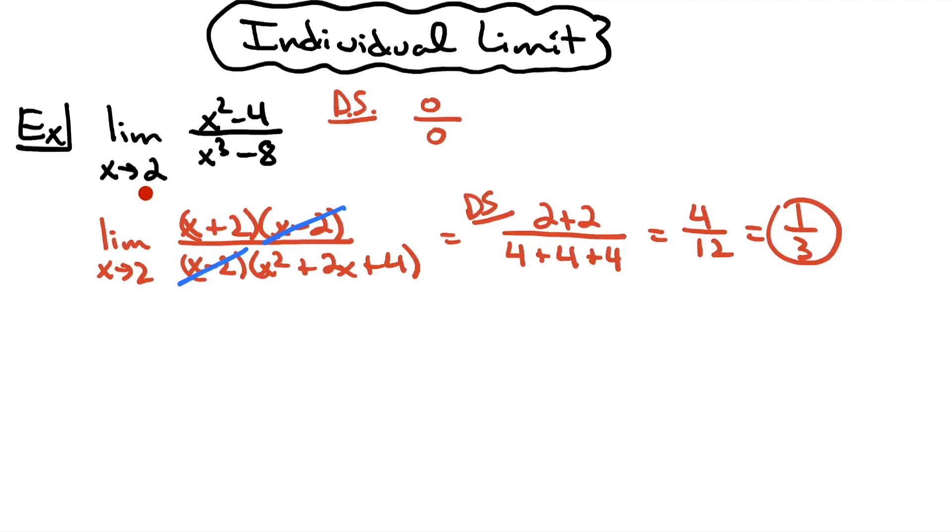Can you algebraically manipulate this by factoring some way, allowing something to cross out, and then having that direct substitution work and result in an answer for you.